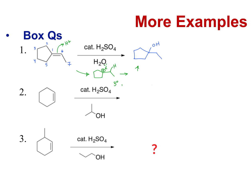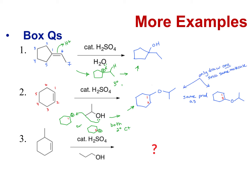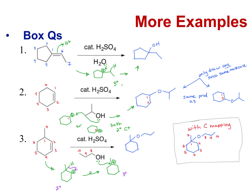For number two, it is Markovnikov, but it doesn't really matter because the carbocation could be in either spot — both of those carbocations are secondary, so it doesn't matter which one you get. The nucleophile attacks that carbocation to give the product. Either product is fine; if you put it on the top or the bottom, it's the same molecule. For the last one, the first carbocation looks like this, but then it can rearrange — going to a tertiary carbocation — so the major product will have the oxygen on that rearranged carbon.